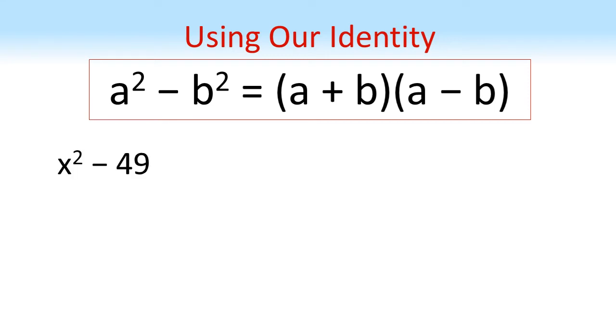Suppose we have a quadratic x squared minus 49. Well, x is being squared, 49 is just 7 squared. So this is the same as x squared minus 7 squared, which fits into our formula. So we get x plus 7 times x minus 7. Our quadratic has been factorized.